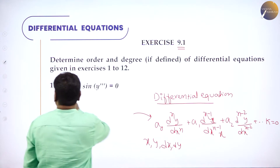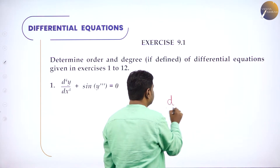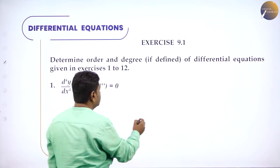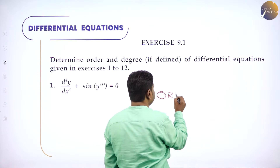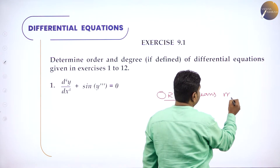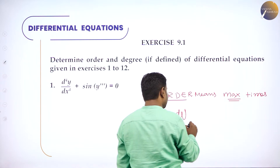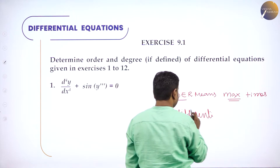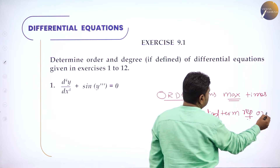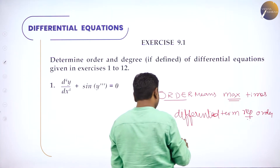To recognize a differential equation: if you find a derivative term, then it is a differential equation. How to find order and degree — most important. Order means the maximum number of times a term has been differentiated. Maximum times differentiated term represents order. And its power represents degree.